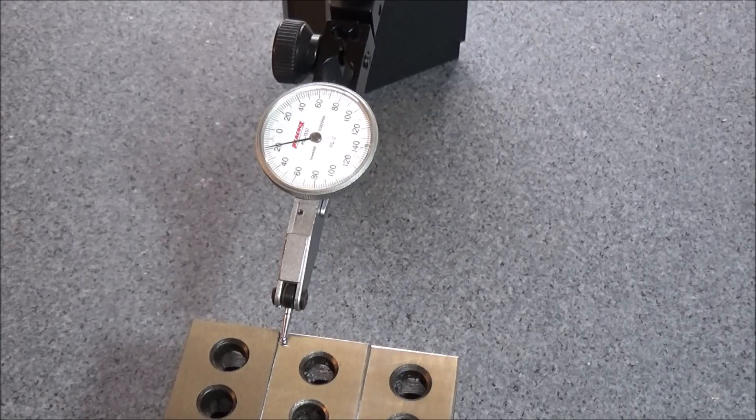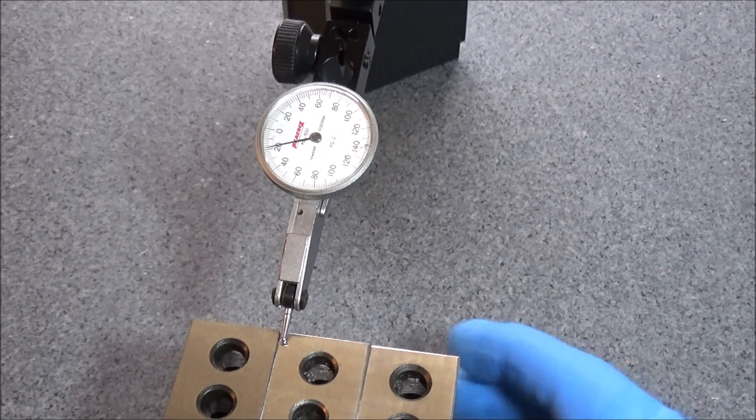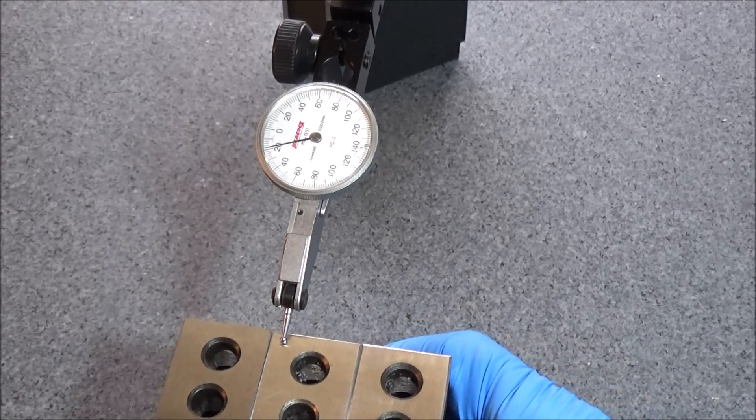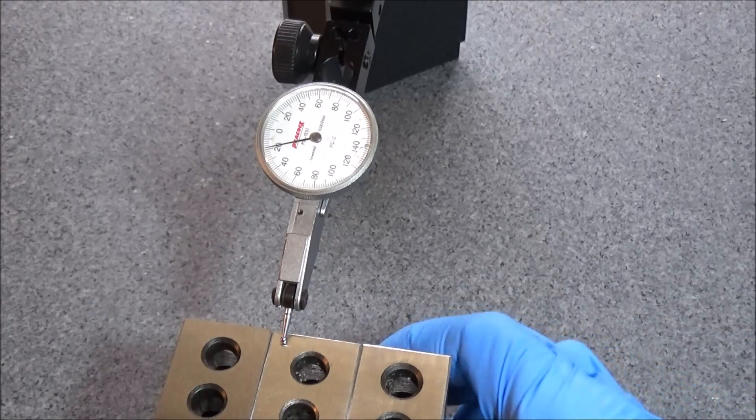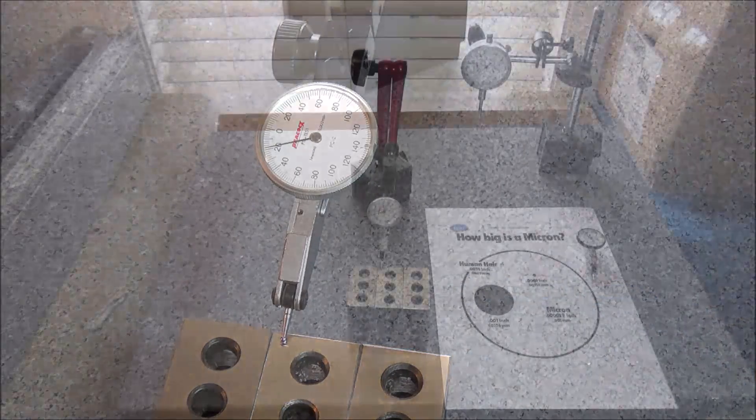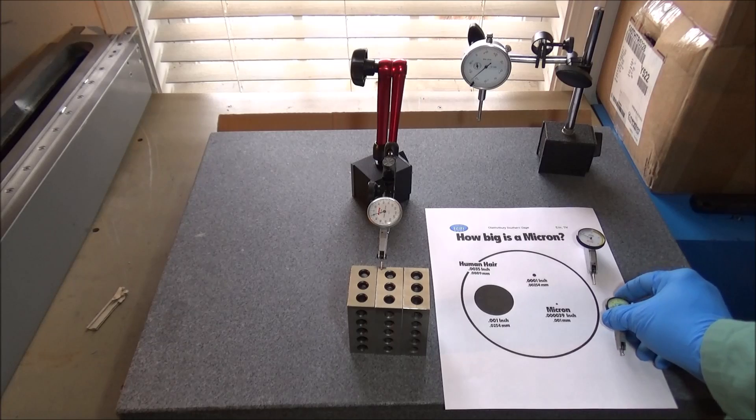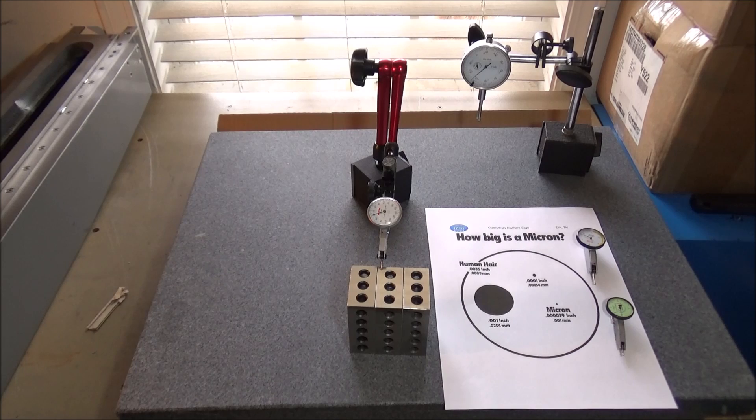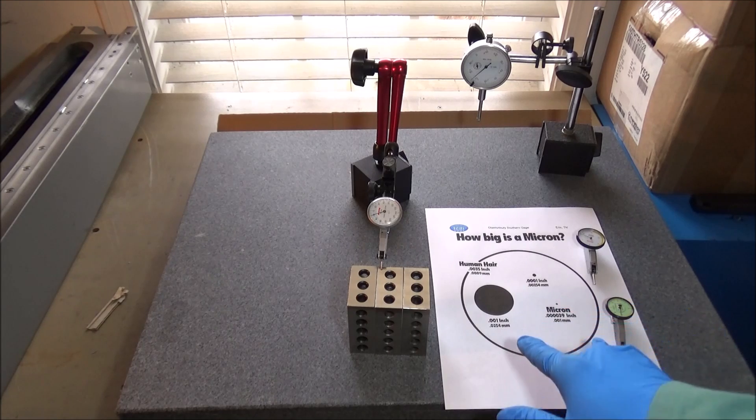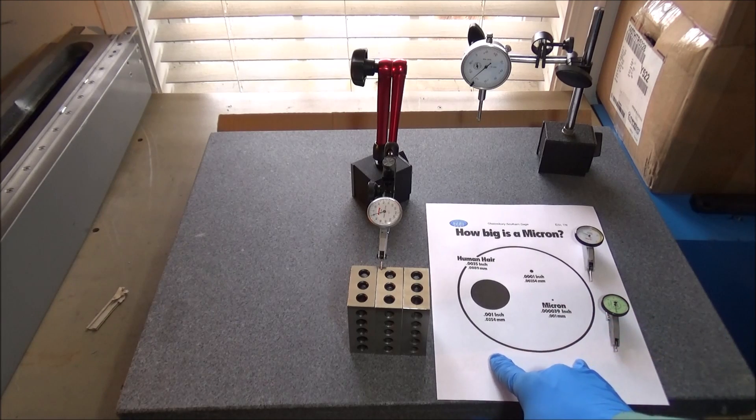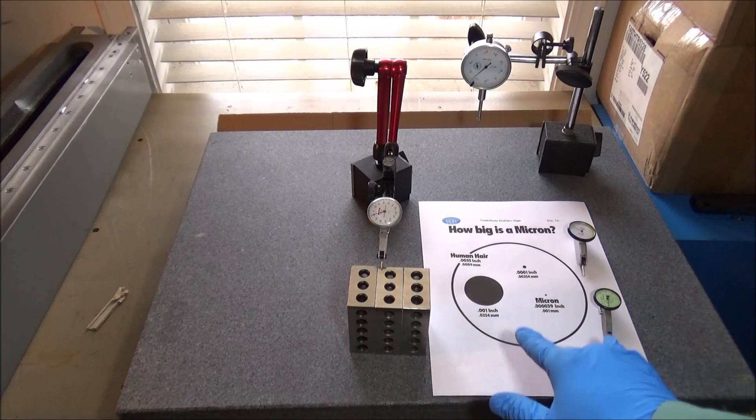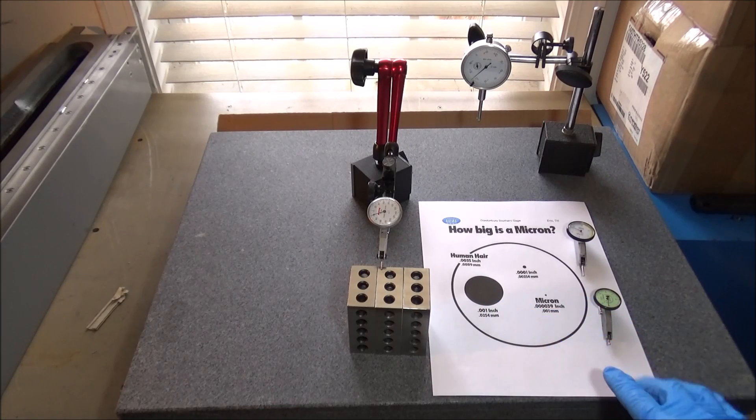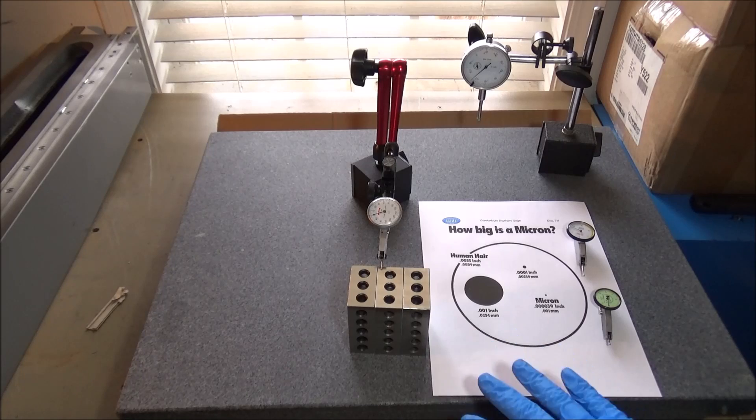However, with my finest indicator you can clearly see the difference here. This is why I purchased several of these one-two-three blocks and checked them all, because I wanted to make sure I got a matching set to do all my checks with. Thanks for watching the video. Hopefully this will help you get a better understanding of what kind of dimensions and tolerances we're really talking about when we start working with these finer indicators.